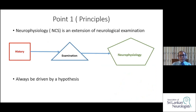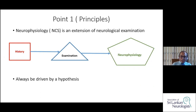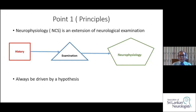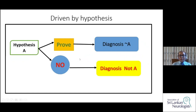Like any investigation, neurophysiology is an extension of neurological examination, meaning you take a history, then examination, and if relevant, you do neurophysiological studies. A basic principle in neurophysiology, like in any other investigative branch of medicine, is that it should always be driven by a hypothesis. You make a clinical diagnosis or clinical suspicion — a clinical question — and neurophysiology will either prove that hypothesis, confirming your diagnosis, or it will be negative and exclude it.